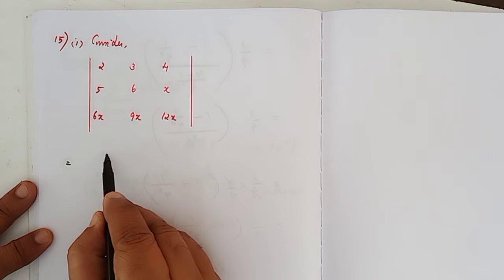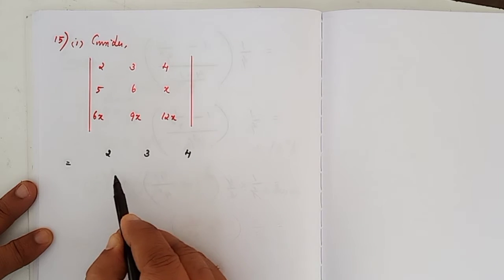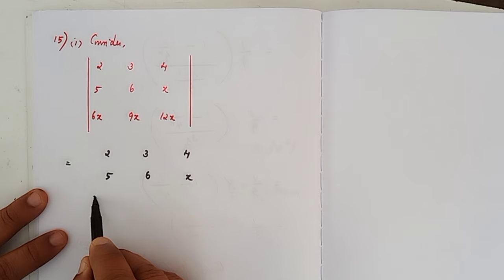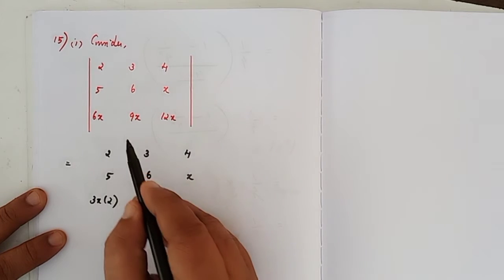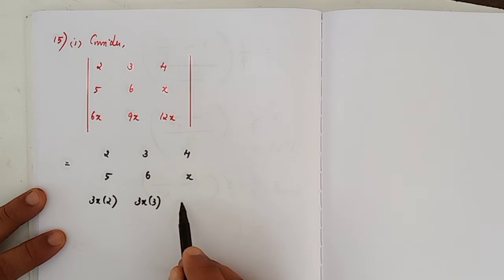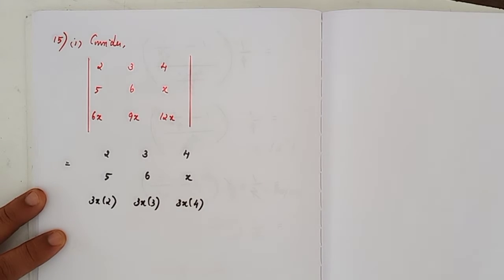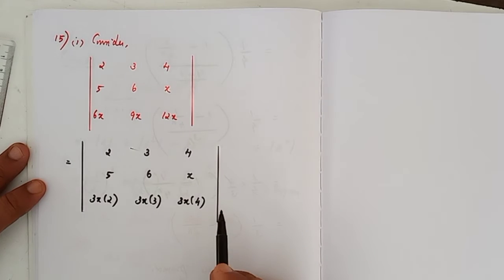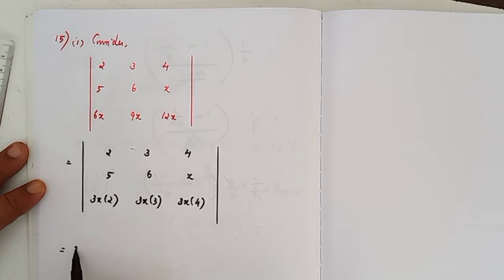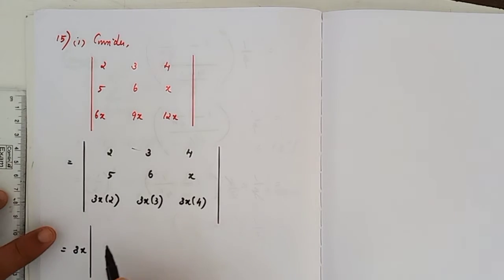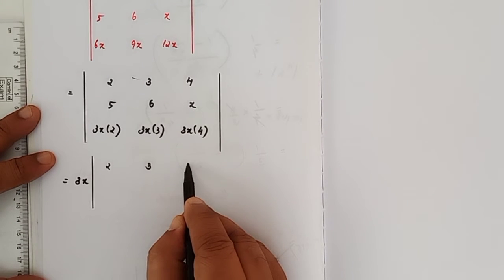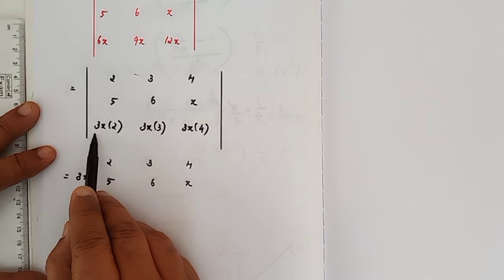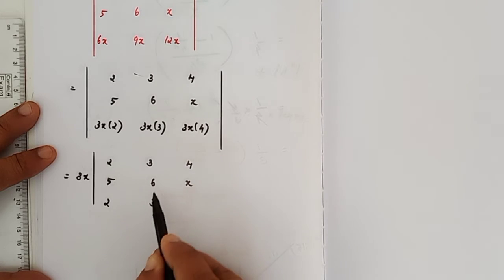Here, first subdivision, write the first row and second row as it is. Third row we can write 3x into 2, here 3x into 3, this one is 3x into 4. Now look at the third row. From the third row we can take 3x as common. If we take 3x as common we will be getting 2, 3, 4, 5, 6 and x as it is. Since I have taken 3x common, which one is left out here: 2, 3 and 4.